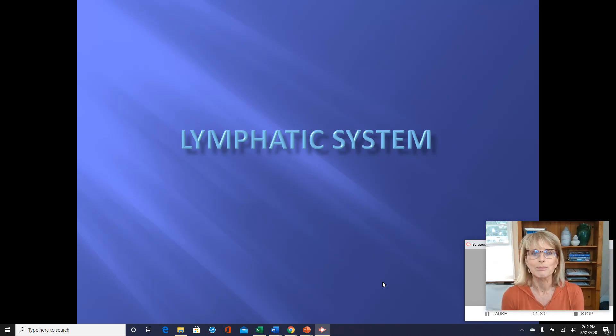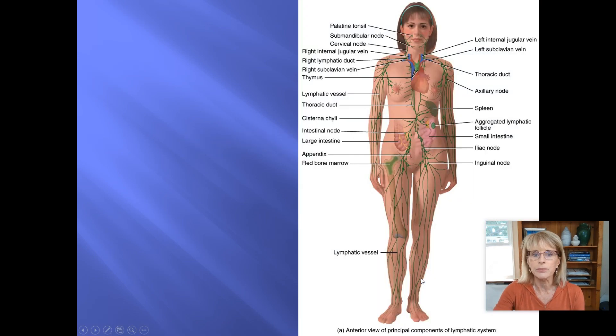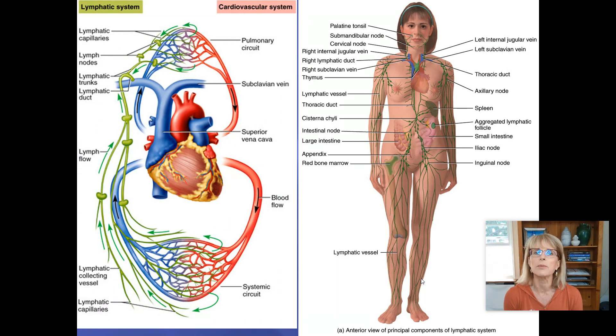So the lymphatic system is our secondary transportation system, and as our secondary transportation system, what is it transporting? It is transporting a substance known as lymph. Lymph is a liquid that's very much like the plasma that is a part of your blood.